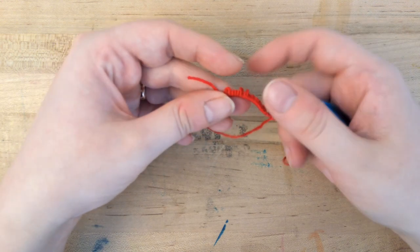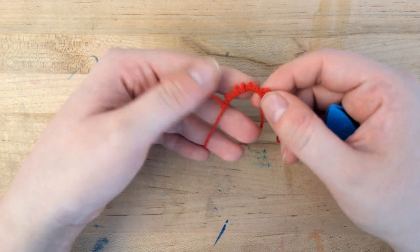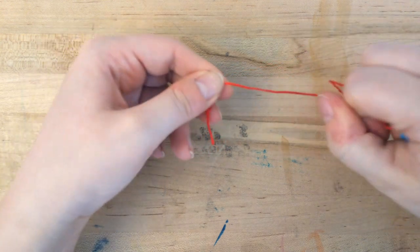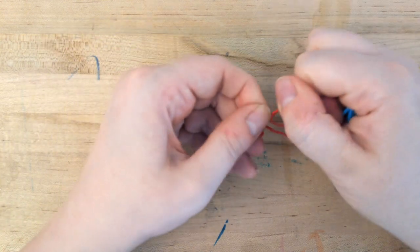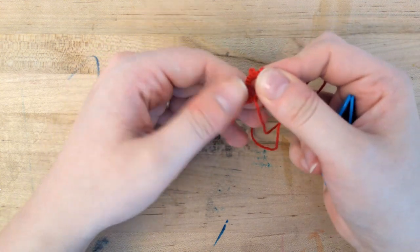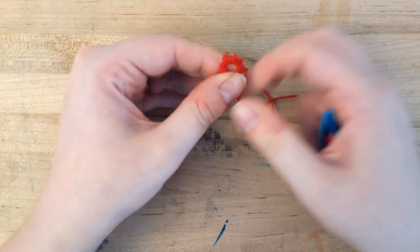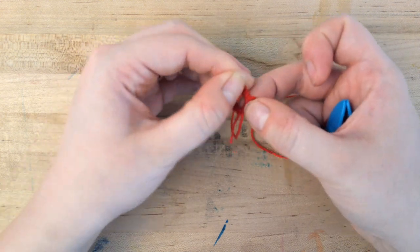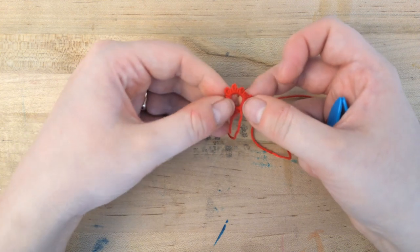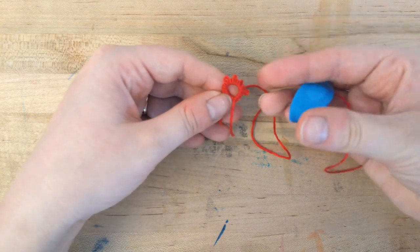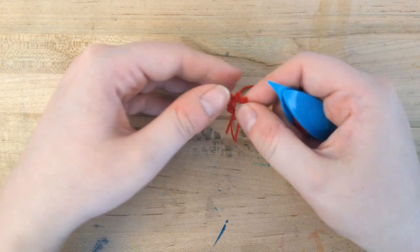So once you've finished following what the pattern says to do, you're just going to pull it tight. Like so. And there we've got our ring. And if any of your picots need a little bit of fluffing you can fluff them out with the end here. But mine are pretty good.